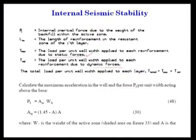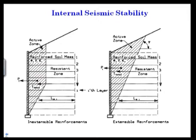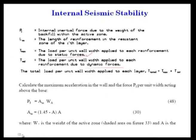One component is due to static forces (T_max) and the other is due to dynamic forces (TMD). The total load per unit wall width applied to each layer is T_total = T_max + TMD. T_max is due to static loading; TMD is due to dynamic forces.